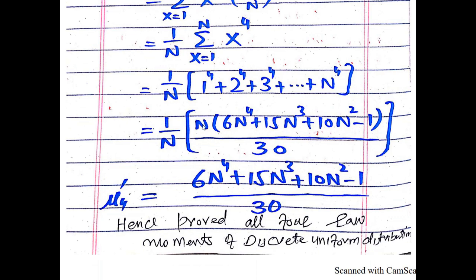Using the formula for the sum of fourth powers: N·(6N⁴ + 15N³ + 10N² − 1)/30. Simplifying by canceling N with N, we are left with the final answer: μ₄' = (6N⁴ + 15N³ + 10N² − 1)/30.